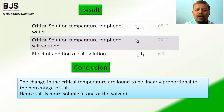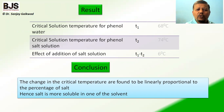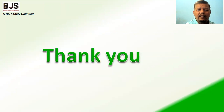Since salt is more soluble in one of the solvents — that is, in water — the critical solution temperature is affected and increases when an impurity is added. In the result, the critical solution temperature of the phenol-water system is 68°C, and due to the effect of salt addition, the critical solution temperature increased by 6°C.